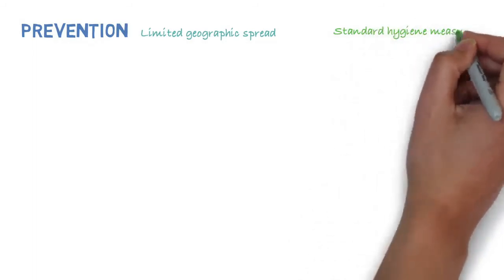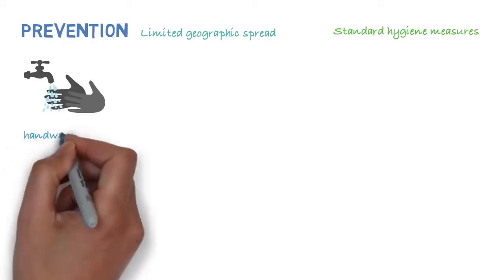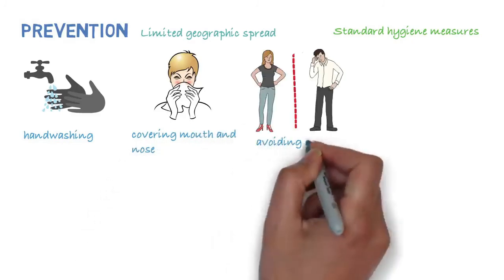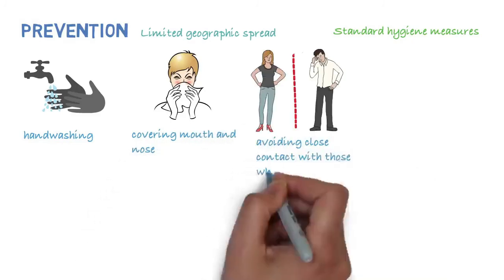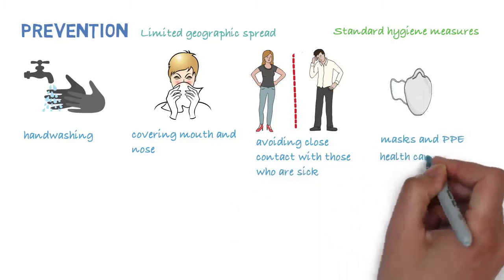How do we prevent transmission of the virus? This new virus currently has a limited geographic spread. However, there are a number of standard hygiene practices that have been recommended to protect against infection and further spread. These include washing hands regularly, covering your mouth and nose after coughing or sneezing, and avoiding close contact with those who are unwell.